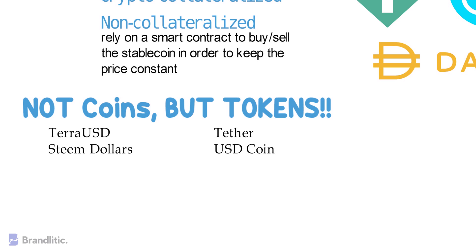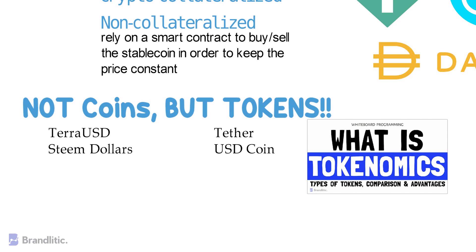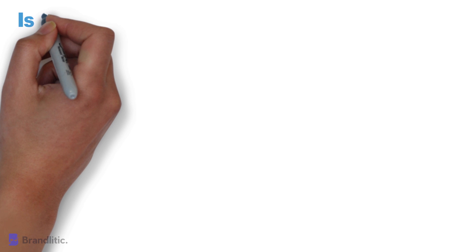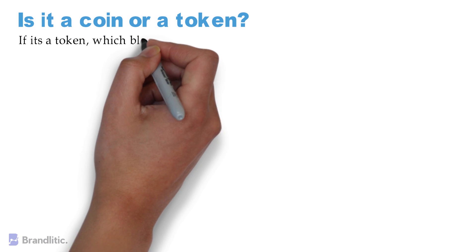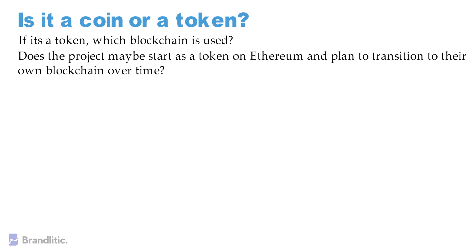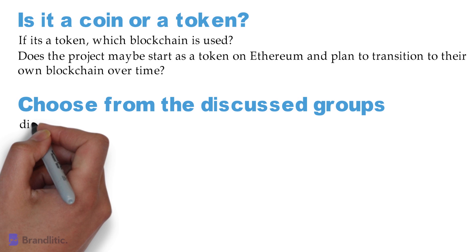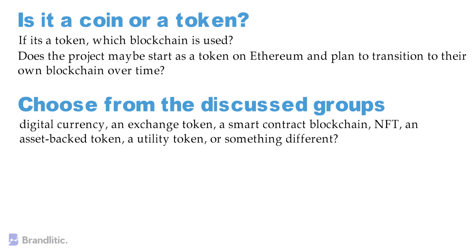As a key takeaway, I recommend watching my video on what is tokenomics for more understanding — link is in the description. Before investing in a crypto project, ask these questions: Number one, is it a coin or a token? If it's a token, which blockchain is used? Does the project plan to transition to its own blockchain over time? Number two, which group does it fall into — a digital currency, exchange token, smart contract blockchain, NFT, asset-backed token, utility token, or something different? The answer may affect regulations and should help you understand how the project provides value to its users.